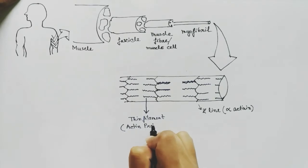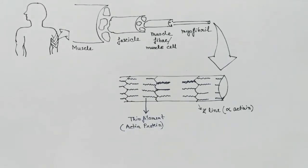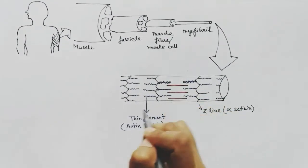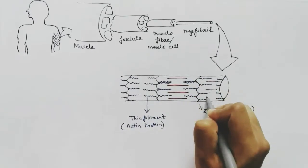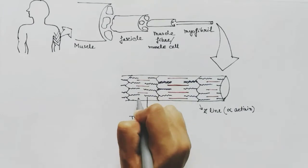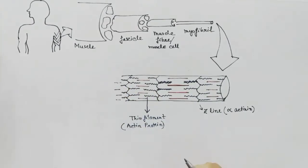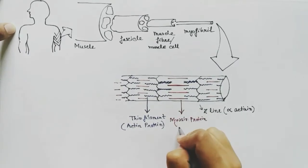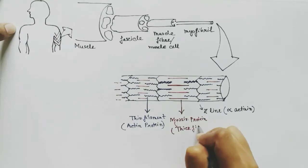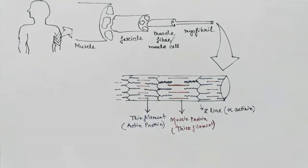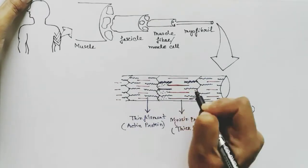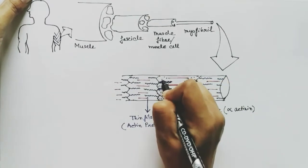Next comes the thick filament, shown here in red. The thick filament is made up of myosin protein and is present between the thin filaments — it is also called the myosin filament. The thick filaments are attached to the Z-line by a protein called titin protein.